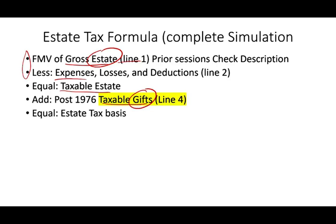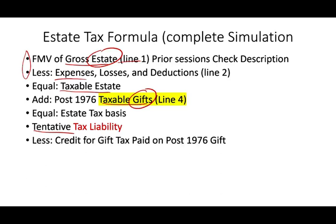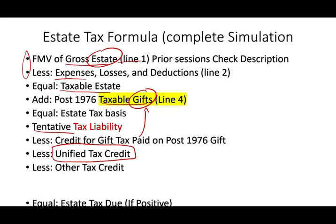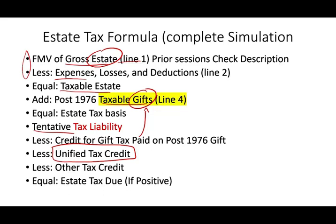Gifts are when you are alive and you gave those gifts. Estate is when you passed away and those assets are passed to your heirs, friends, or family. Then we compute your tentative tax liability. Then we deduct any gift tax credit you paid on those gifts when you were alive. Then we deduct the unified tax credit — that's the big focus here — less any other tax credit. If anything is left, it's the estate tax due if that number is positive.